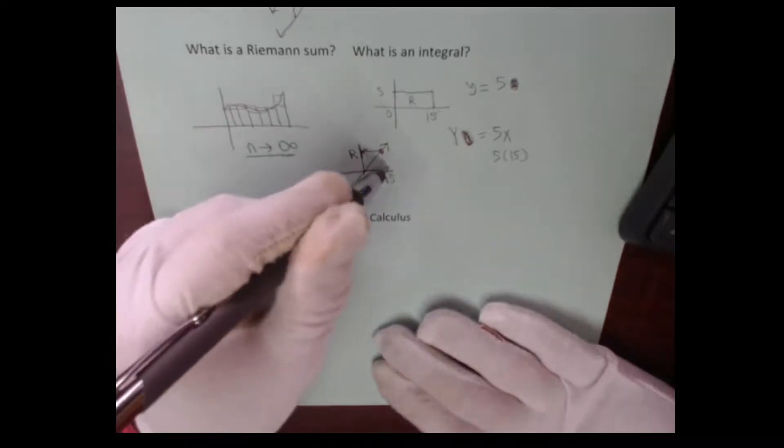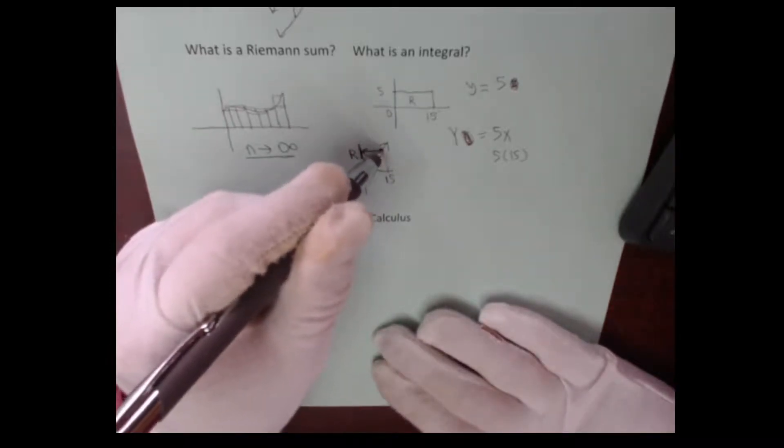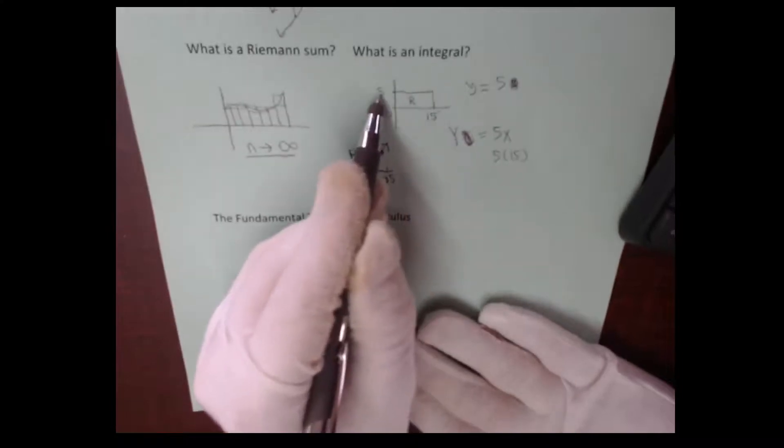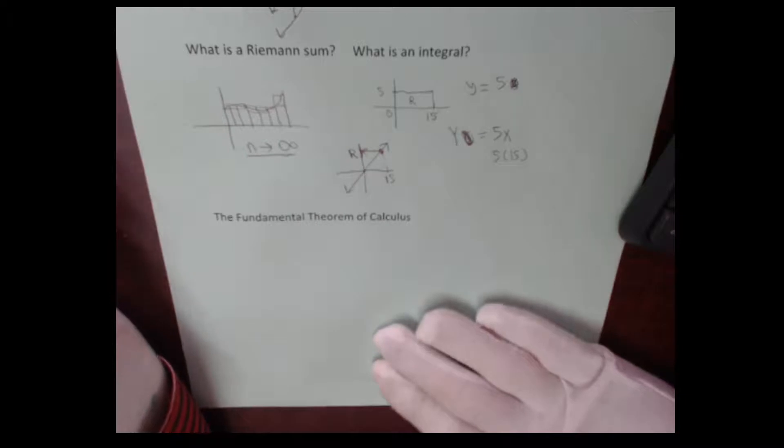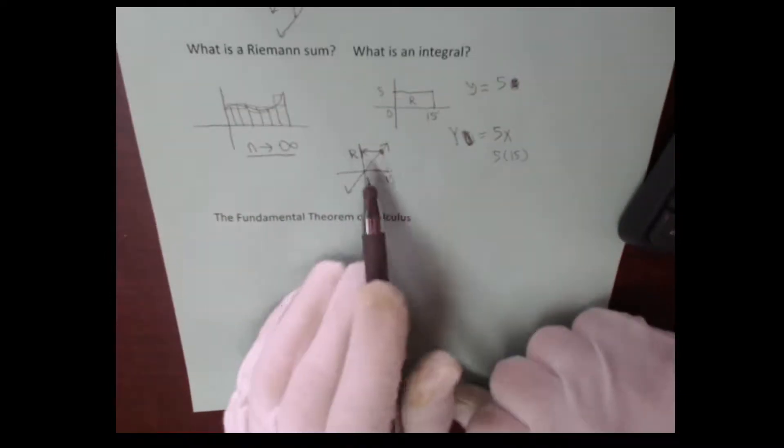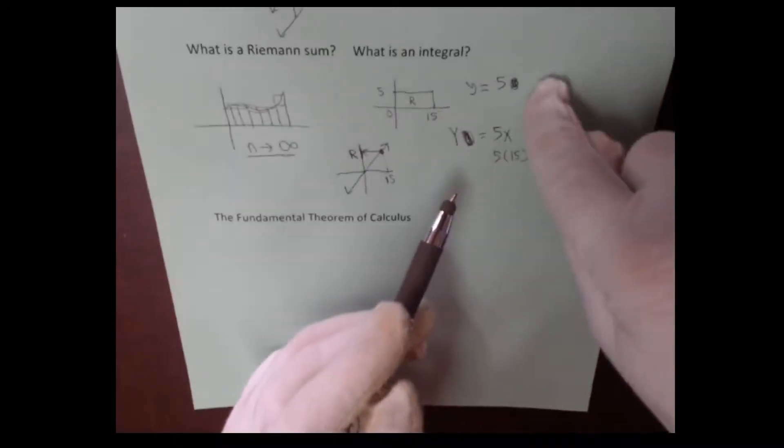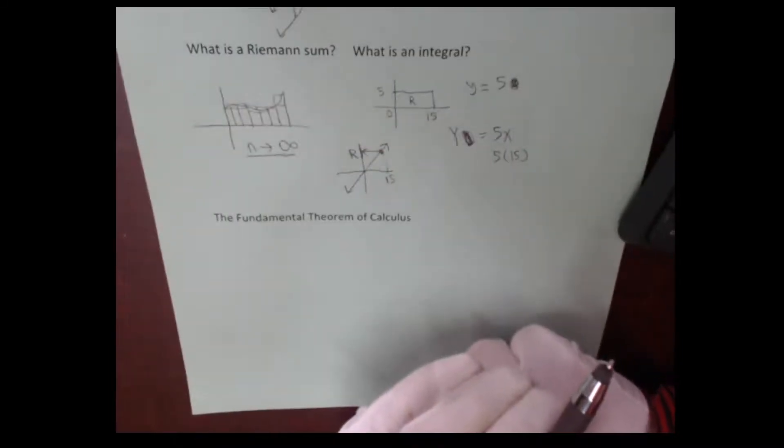All right, so the value right here, where this value was of the antiderivative of this y = 5 equation is going to be the area of that rectangle. And what's really cool about this is that this doesn't just work for rectangles. It works for anything where we have an equation that we can find the antiderivative of.